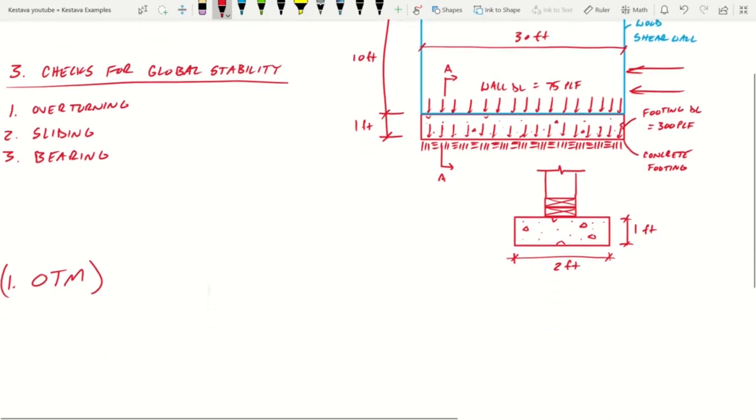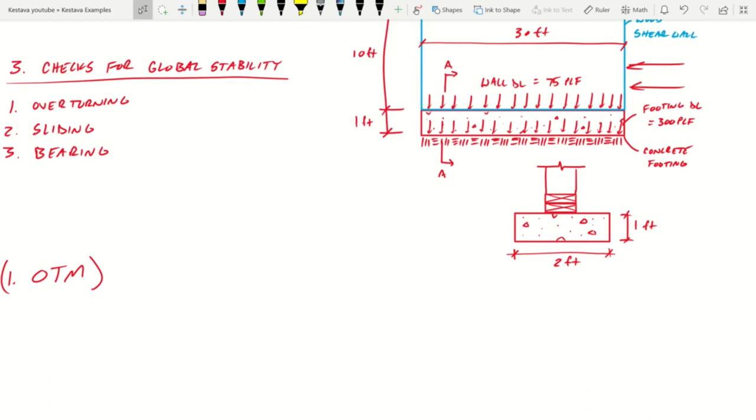And what we do is we then take those results and we compare them to a factor of safety, and it's usually an industry standard. Factor of safety for overturning, you want to make sure you're greater than a factor of safety of 2.0. For sliding, you're greater than a factor of safety of 1.5. And for bearing, you're greater than a factor of safety of 2.0. You'll see what those equate to and how we find them as we move along here.